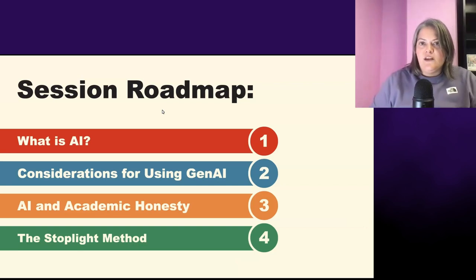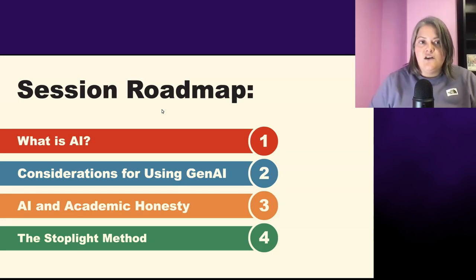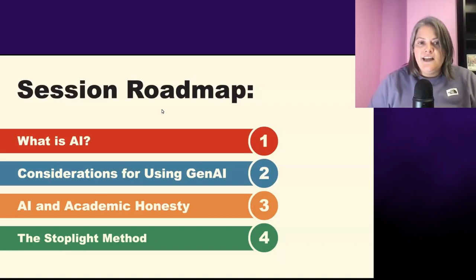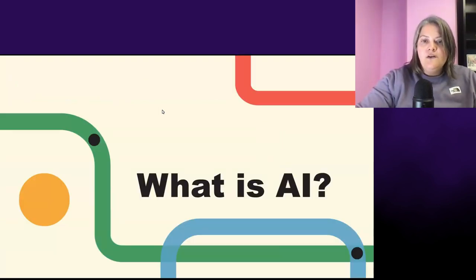I'm going to talk quickly about what our session roadmap is. We really want to help you navigate AI. We're going to start out talking about what AI is, go into considerations for using AI, talk about AI and academic honesty, and then we're going to show you the stoplight method.